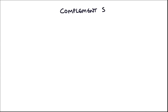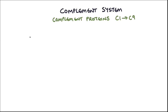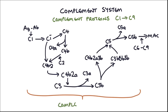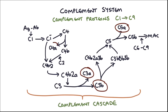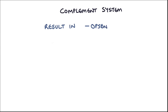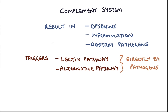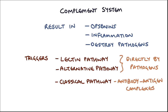Next let's look briefly at the complement system. The complement system works alongside the innate and the specific immune system to help them destroy pathogens. This involves a series of complement proteins labeled C1 to C9. Once the complement system is triggered, the proteins start to activate each other in something called the complement cascade. Various products of the complement cascade have important functions such as acting as opsonins, triggering further inflammation, and directly attacking and destroying the pathogens. The complement system is triggered in one of three ways: the lectin and the alternative pathway are activated directly by pathogens, and the classical pathway is activated by antibody-antigen immune complexes that arise from the specific immune system.